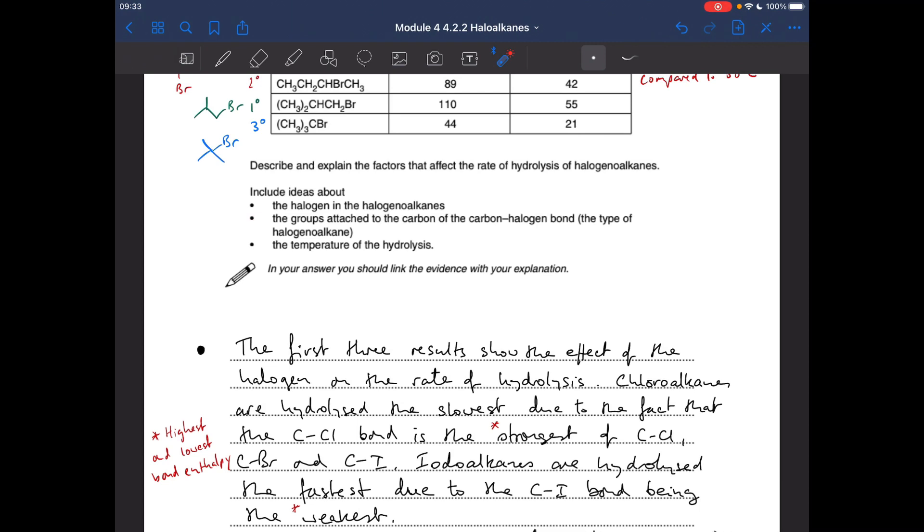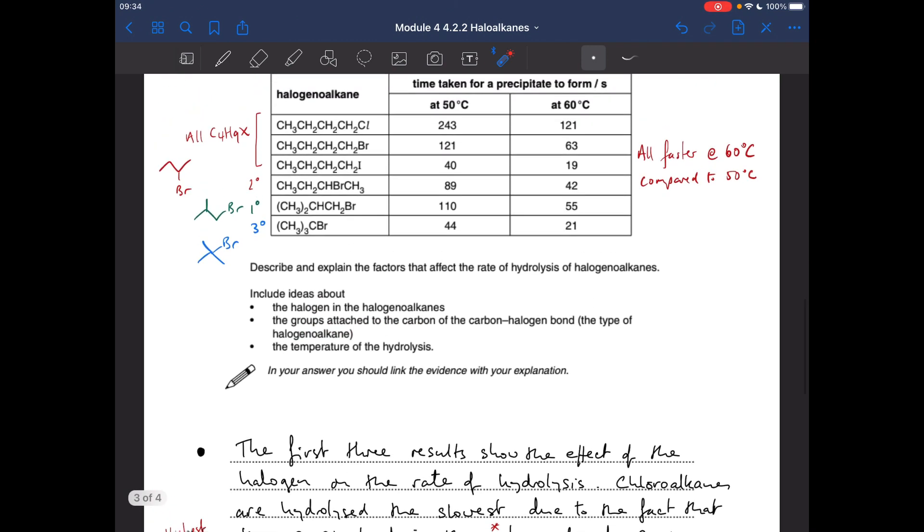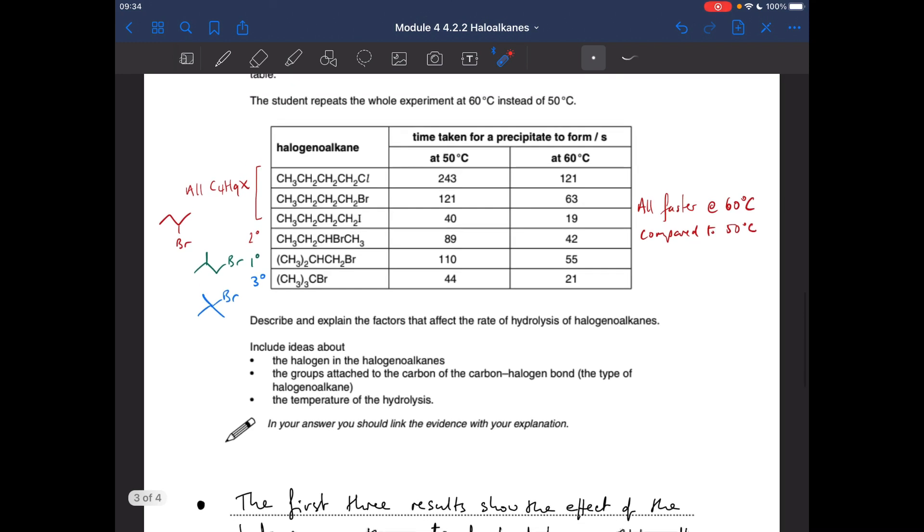Okay, so we'll move on to the second bullet point now, the type of halogenoalkane. So that's down to the number of groups attached to the carbon of the carbon-halogen bond. That's illustrated by these three here, because these are all bromoalkanes, so we're not varying the type of halogen. This one here is actually a secondary halogenoalkane. There's the skeletal formula for it. So the carbon with the bromine on is bonded to two directly.